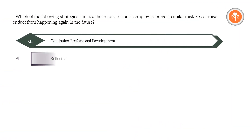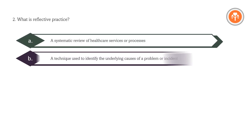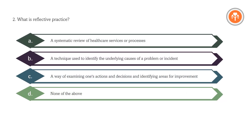Question: Which of the following strategies can healthcare professionals employ to prevent similar mistakes or misconduct from happening again in the future? Question: What is reflective practice? A. A systematic review of healthcare services or processes. B. A technique used to identify the underlying causes of a problem or incident. C. A way of examining one's actions and decisions and identifying areas for improvement. D. None of the above. Answer: C. A way of examining one's actions and decisions and identifying areas for improvement.